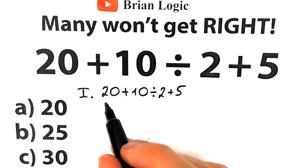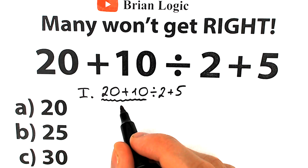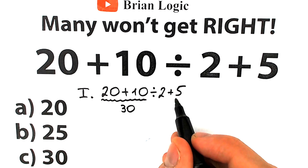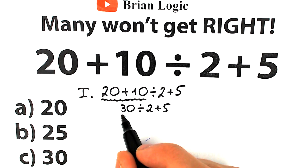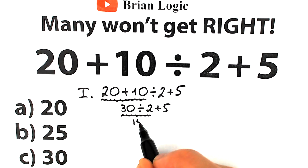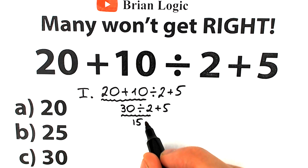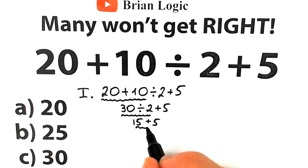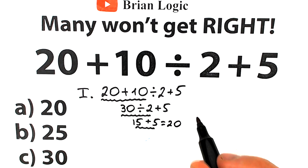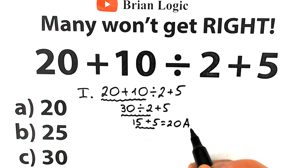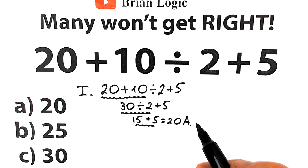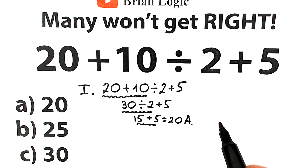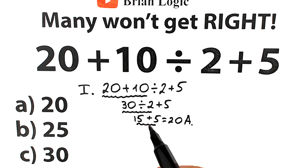A lot of students start with the left-hand side: 20 plus 10 gives us 30. So then we have 30 divided by 2, which equals 15, and 15 plus 5 equals 20. A lot of students solve it this way and say the correct answer is Option A. They don't know about order of operations and just solve left to right — because obviously, whatever order you select creates a different answer.